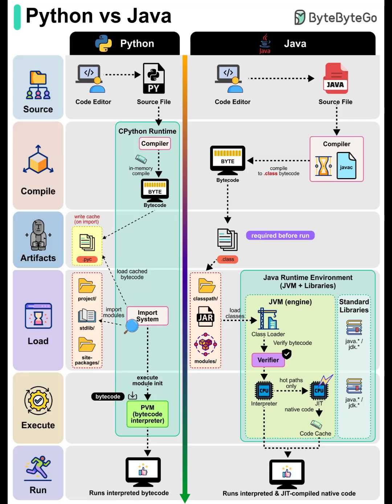When it's time to execute, Python fires up the Python Virtual Machine, or PVM. This bytecode interpreter runs every instruction line by line. Everything in Python is interpreted at runtime. There's no turning Python code into actual native machine code by default, which is why some people say Python can be slower.